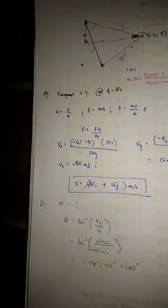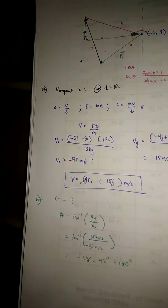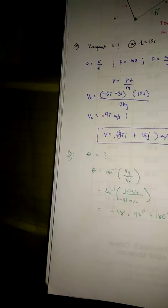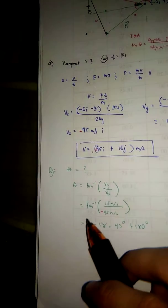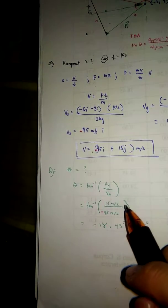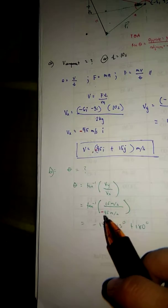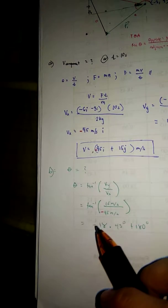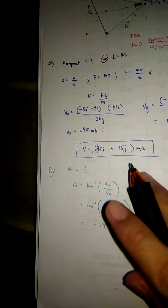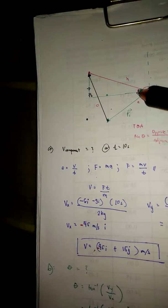We're back and let's answer letter B. We used the formula of tan raised to negative 1, 15 meters per second over negative 45 meters per second. The result is negative 18.43 plus 180 degrees. This is the angle right over here.